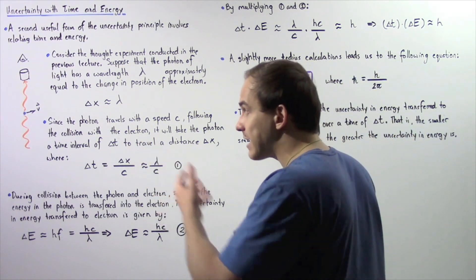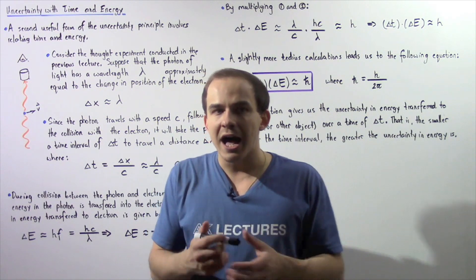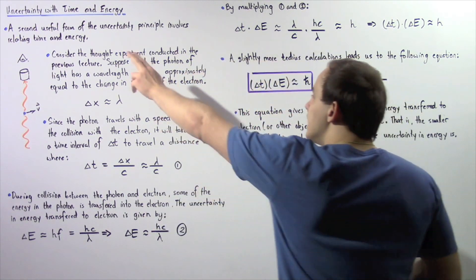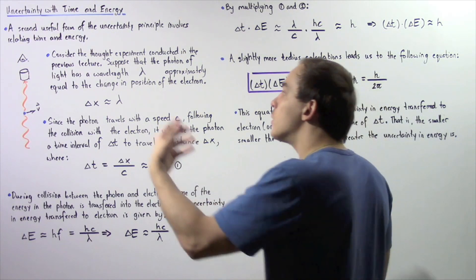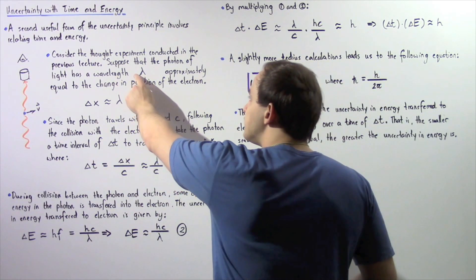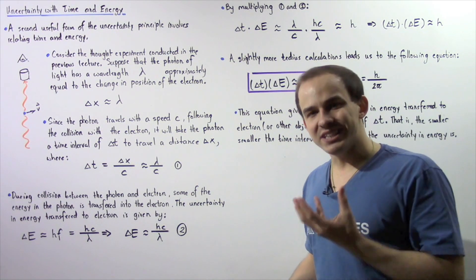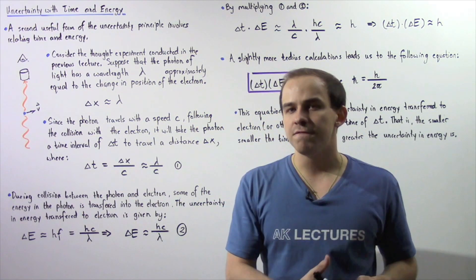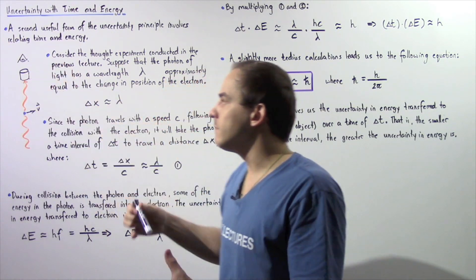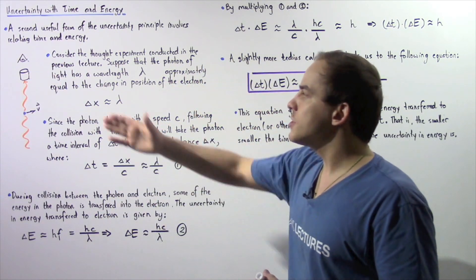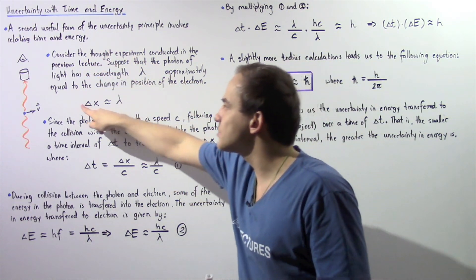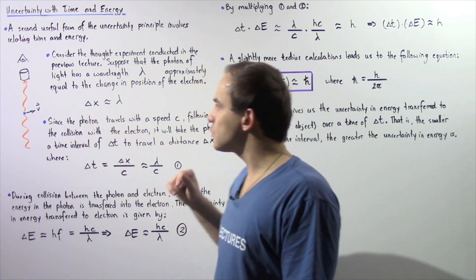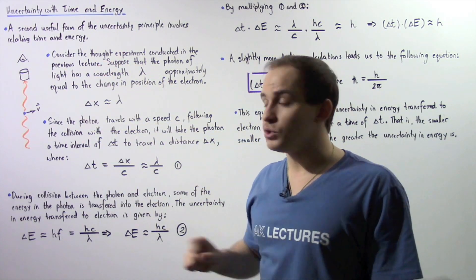Basically, to observe that electron, we have to collide the wave of light — the photon of light — with this electron. Suppose that the photon of light that our microscope uses has a wavelength given by lambda, which is approximately equal to the change in position of that electron during the collision between the photon and the electron. The photon of light collides with the electron, and the electron changes in position given by delta x. So delta x represents the uncertainty in our position of the electron.